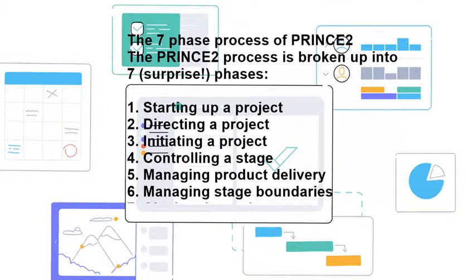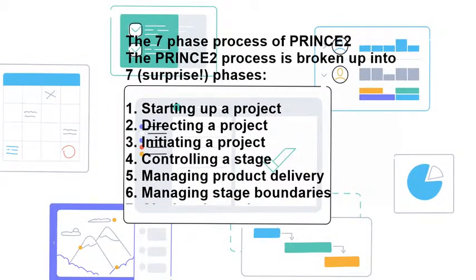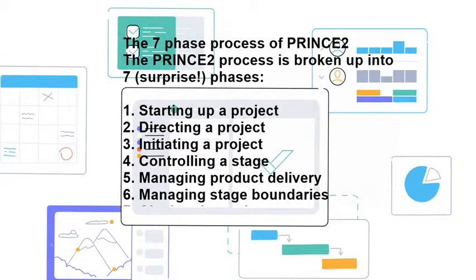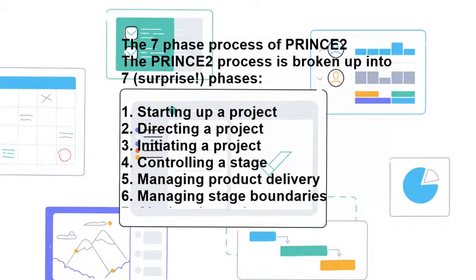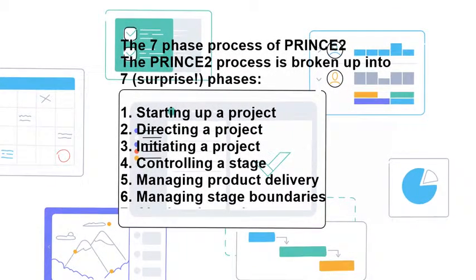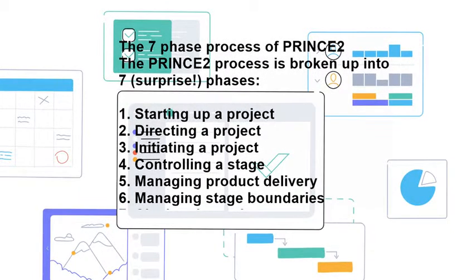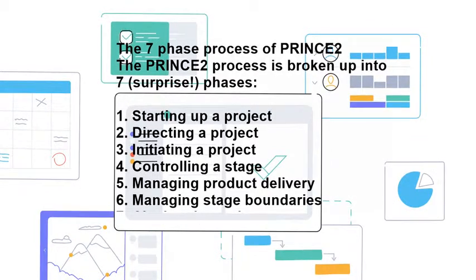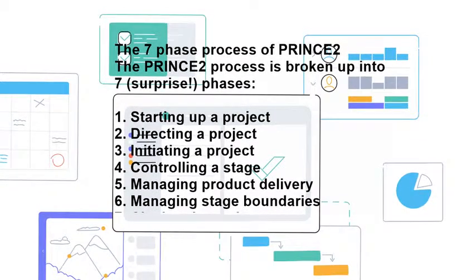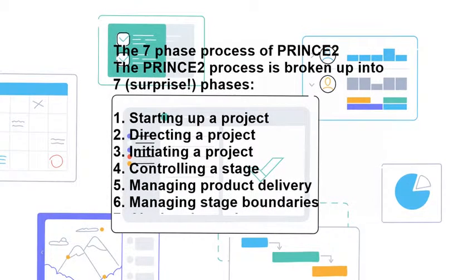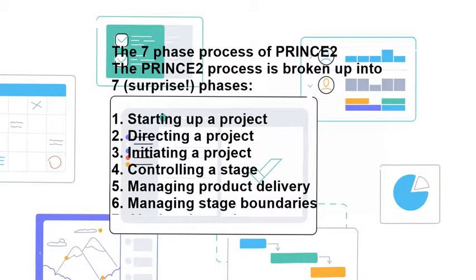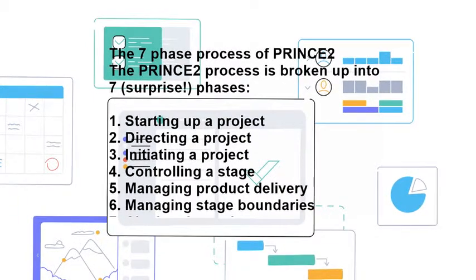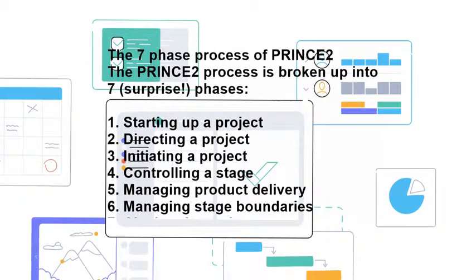Once the board is confident in the project plan, they give their approval and work begins. The fourth phase is Controlling a Stage. The project manager breaks down the project into smaller work packages and passes them off to team managers and teams to complete. The project manager oversees the progress of work packages during each stage and steps in to help overcome roadblocks or correct any mistakes if necessary. Team managers coordinate detailed daily work and act as the link between the project manager and individual team members, helping to make sure everything goes according to plan.